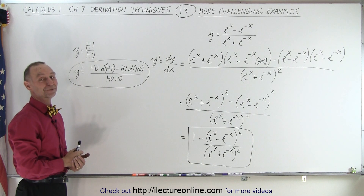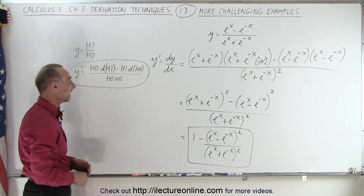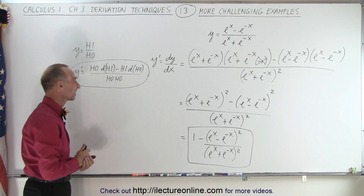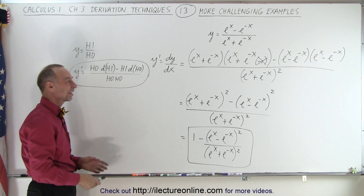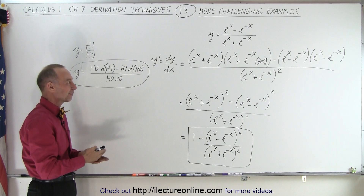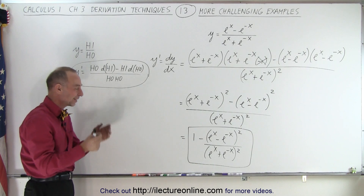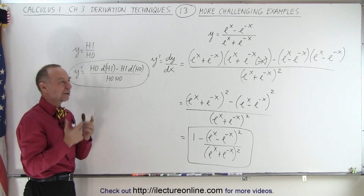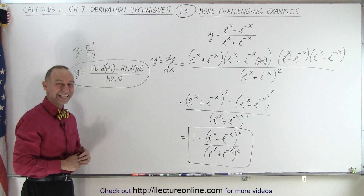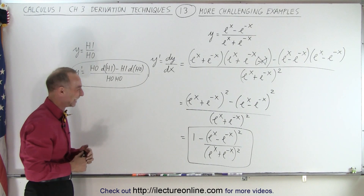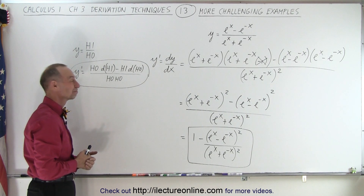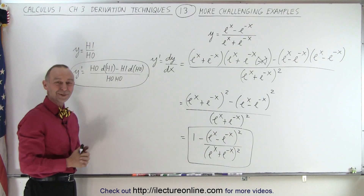Kind of rolls off the tongue — you probably only need to say that fifty times so that it sticks. I learned it the other way: the denominator times the derivative of the numerator, minus the numerator times the derivative of the denominator, all over the denominator squared — it's just solid in my brain. But I'm sure for you, ho d-high minus high d-ho over ho-ho is a lot faster. So now you can choose which one you like better.